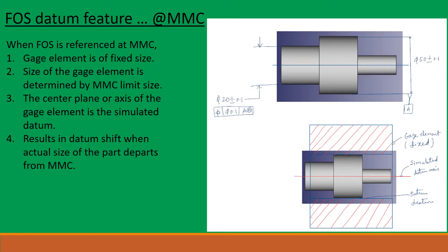FOS Datum Feature at MMC. When FOS is referenced at MMC, the gauge element is of fixed size. The size of the gauge element is determined by the MMC limit size, and the center plane or axis of the gauge element is the simulated datum. It results in datum shift when the actual size of the part departs from MMC.